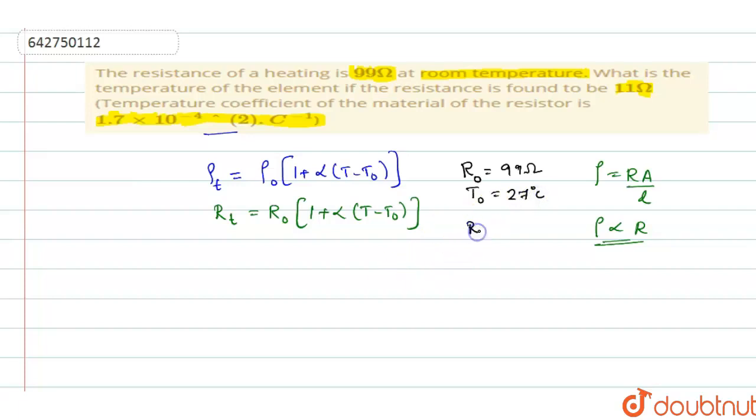Similarly, resistance R T is given as 11 Ohms and you are supposed to find T. And the alpha value, the temperature coefficient, is already given. It is 1.7 into 10 power minus 4 per degree Celsius.